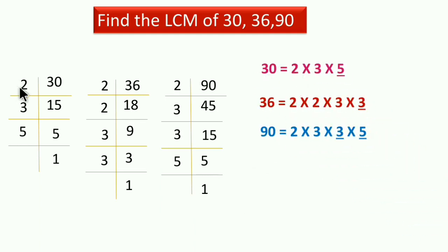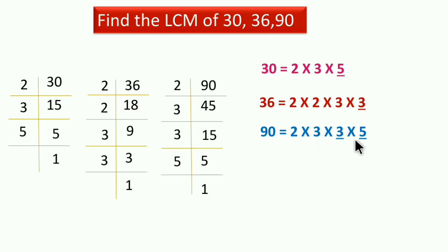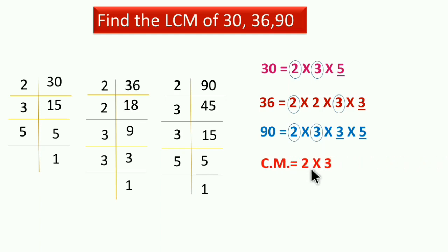अब 30 के multiples: 2×3×5। 36 के multiples: 2×2×3×3। 90 के multiples: 2×3×3×5। यह जो left side के numbers हैं यह multiples होते हैं। अब इन तीनों में जो common है वो अलग से निकालना है। 2 तीनों में है, और 3 भी तीनों में है। इसलिए common multiples: 2×3।